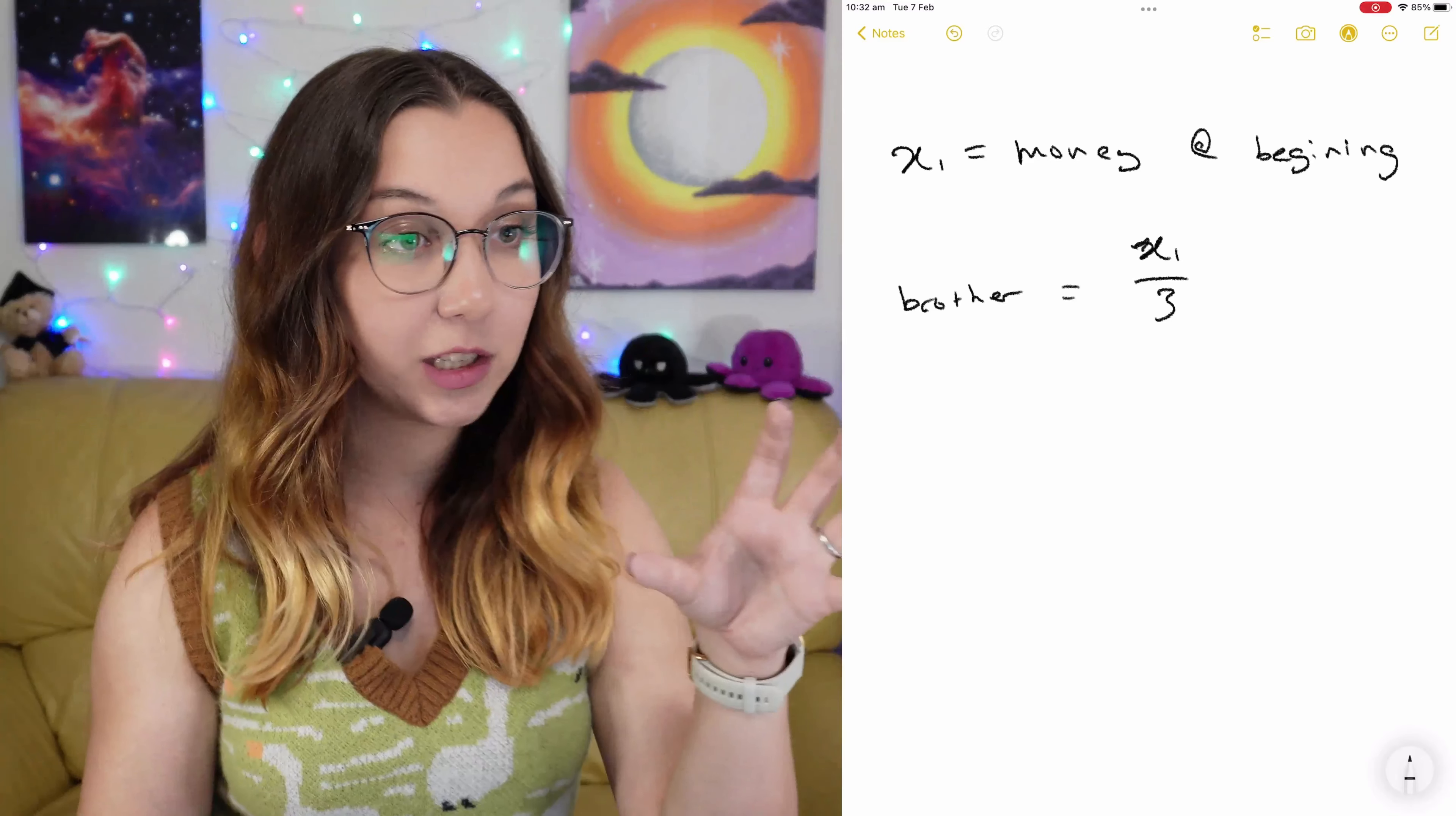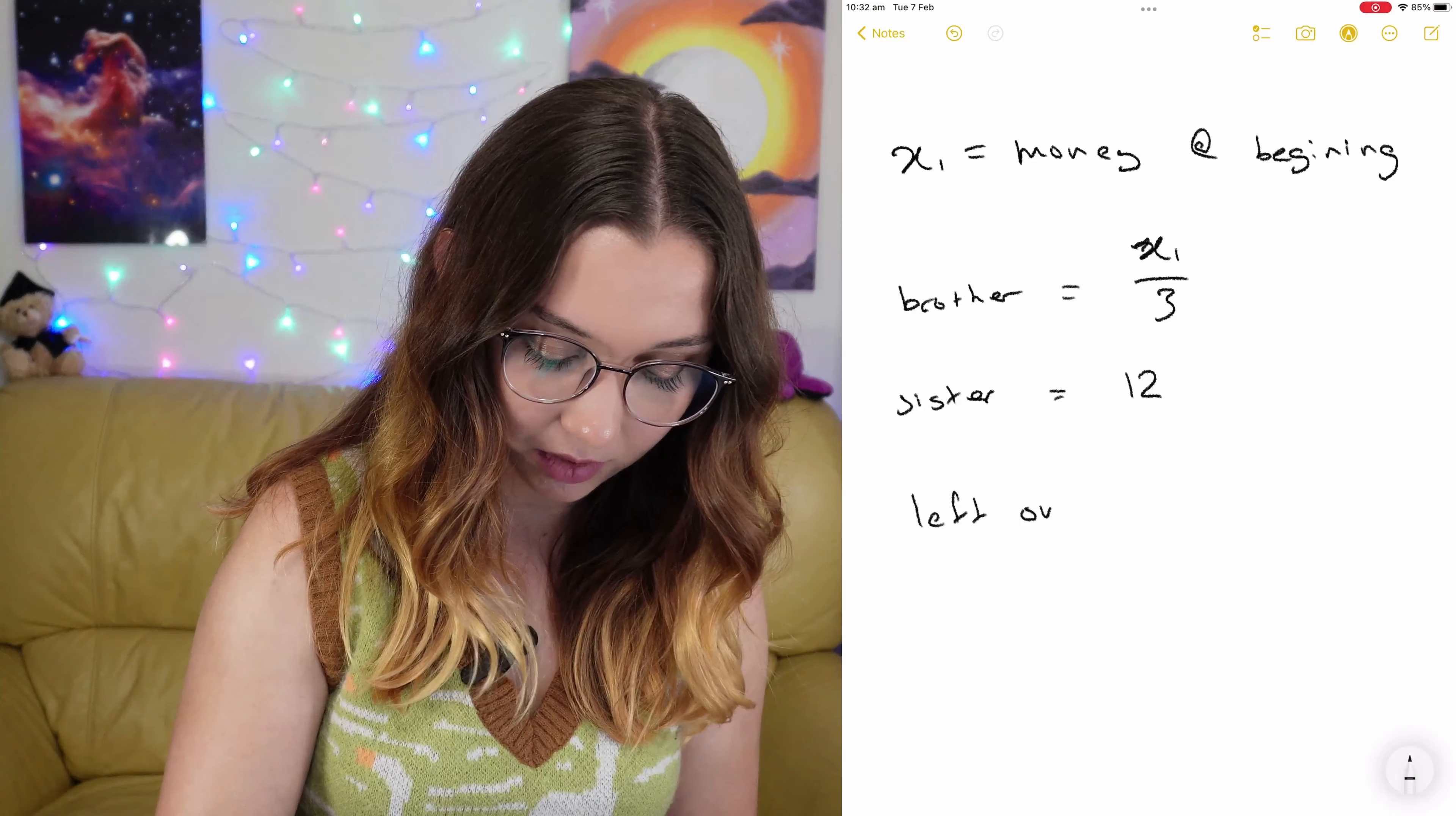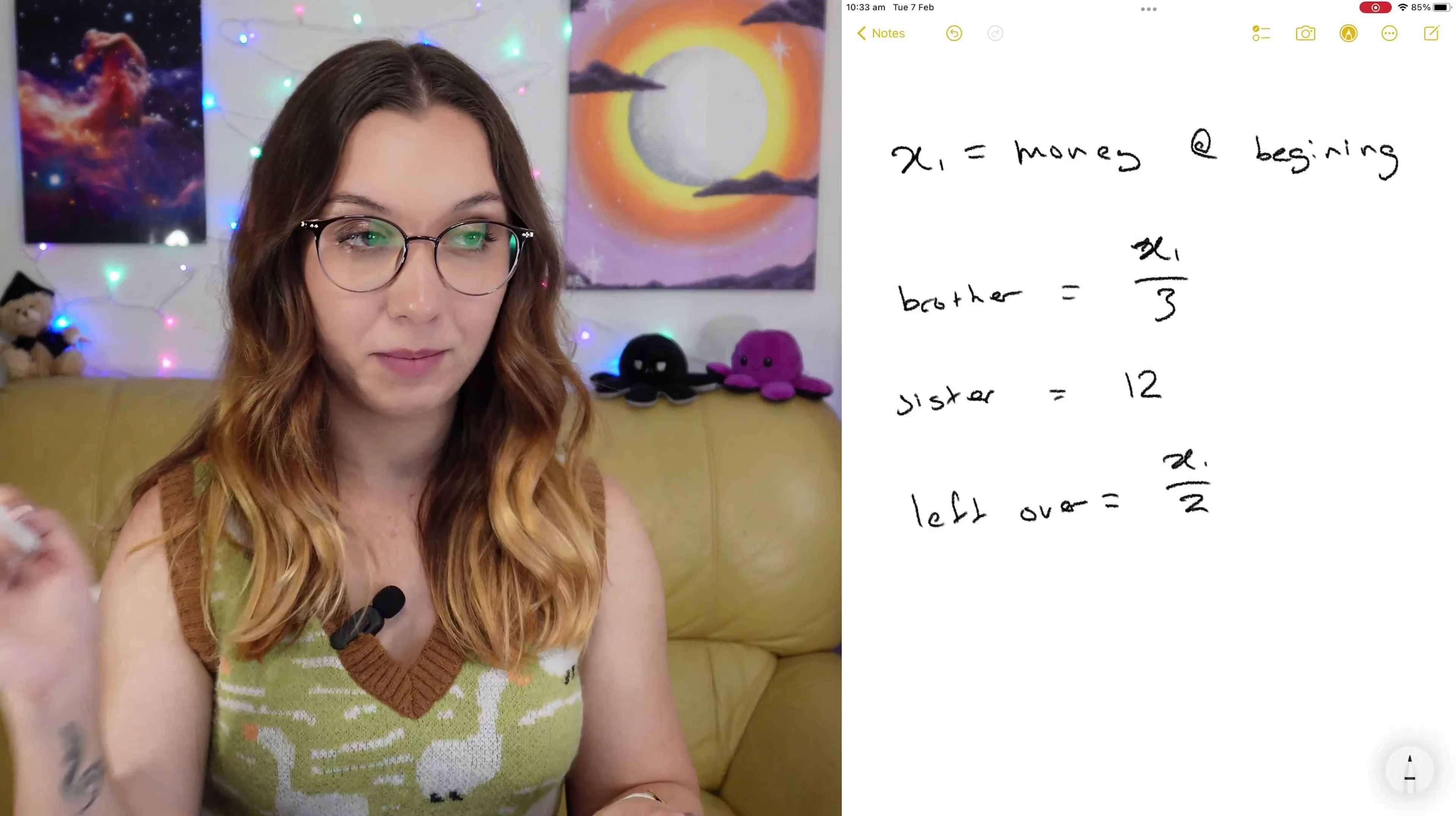He then spent 12 euro on a present for his sister. So sister equals 12, just a plain old number. He then counted what he had left, and it was half of what he had at the beginning. So left over is x1 over 2.